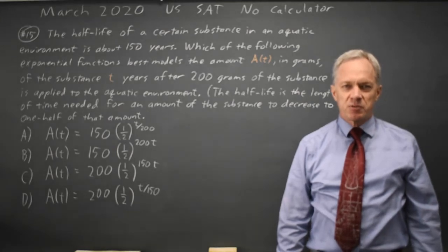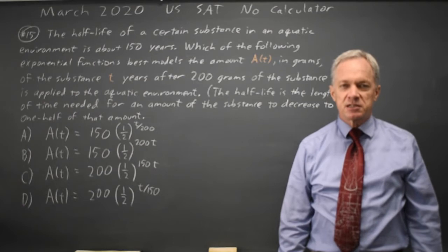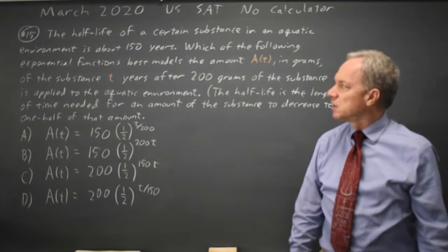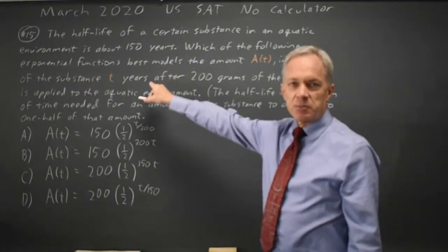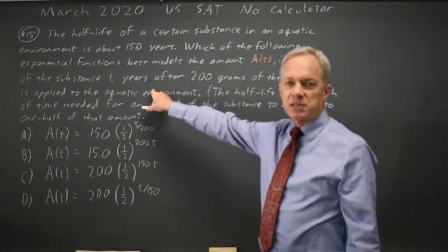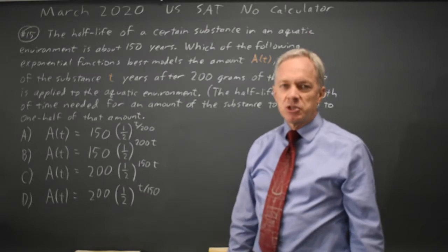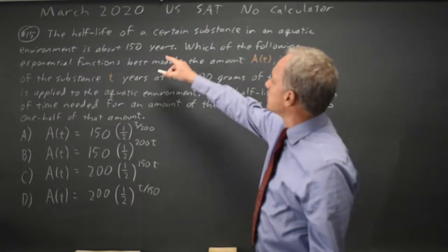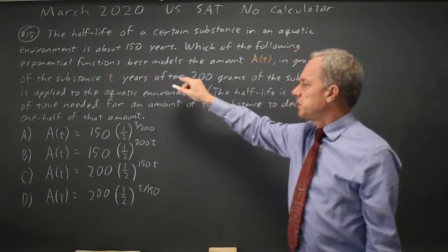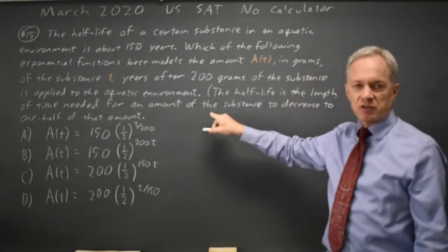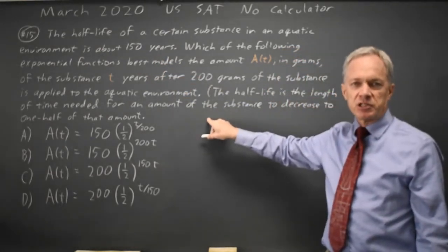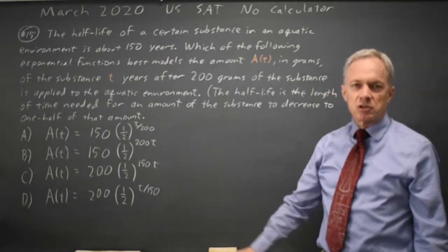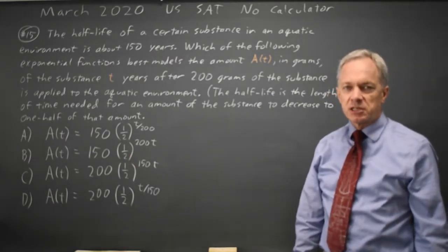I'm Dr. Roger, and this question is from the March 2020 U.S. exam, non-calculator section. The College Board describes an exponential decay situation where we start with 200 grams of a substance and its half-life is 150 years, meaning after 150 years half the original amount will still remain. They ask which of these four equations describes that situation.